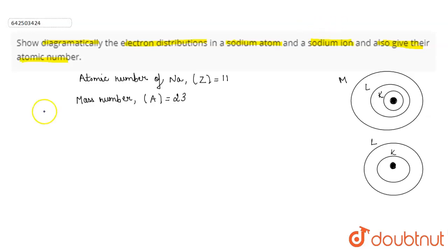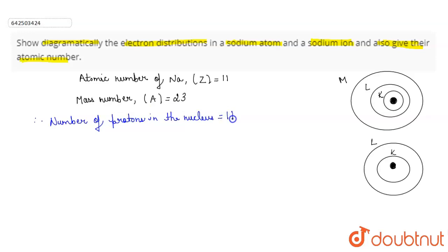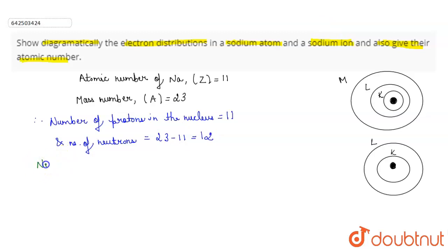Therefore, the number of protons in the nucleus is 11, and the number of neutrons in the nucleus will be 23 minus 11, which gives 12. The number of electrons is also 11.